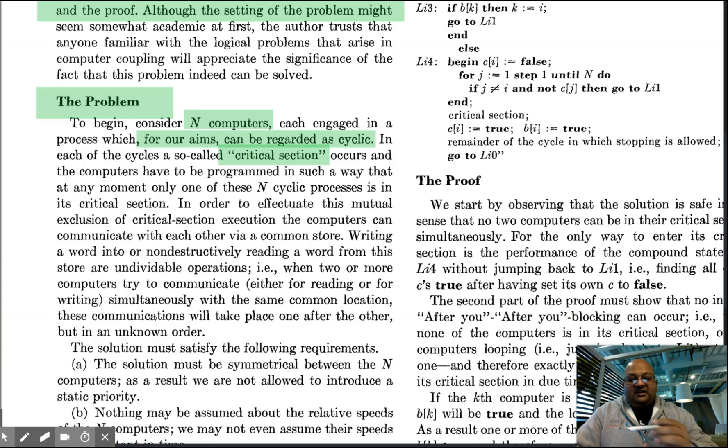And the property we want to enforce is that at any given time, only one of these processes is executing its critical section. This is the mutual exclusion problem.